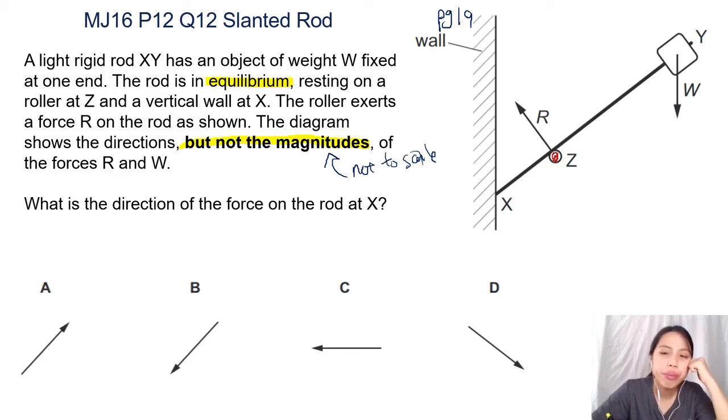So if you choose that as your pivot, W has a clockwise moment - it's going to cause the thing to move that way. X then has to cause an anticlockwise moment here, so you know X should be somewhere below this rod, it should be pointing somewhere there. So that's the first clue. Okay, I'll rub it off.